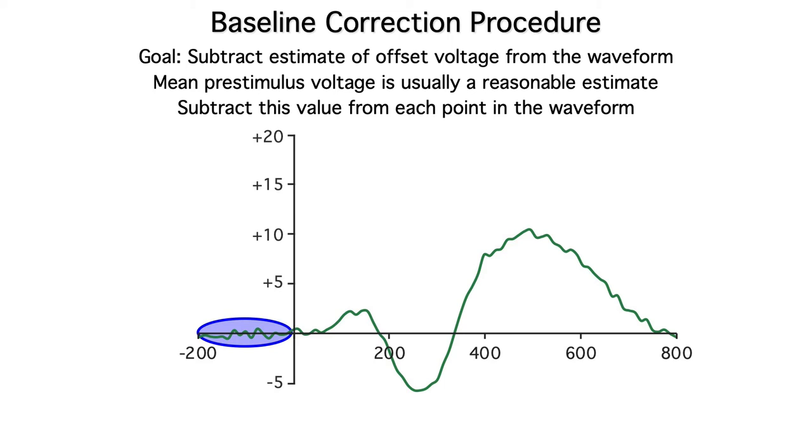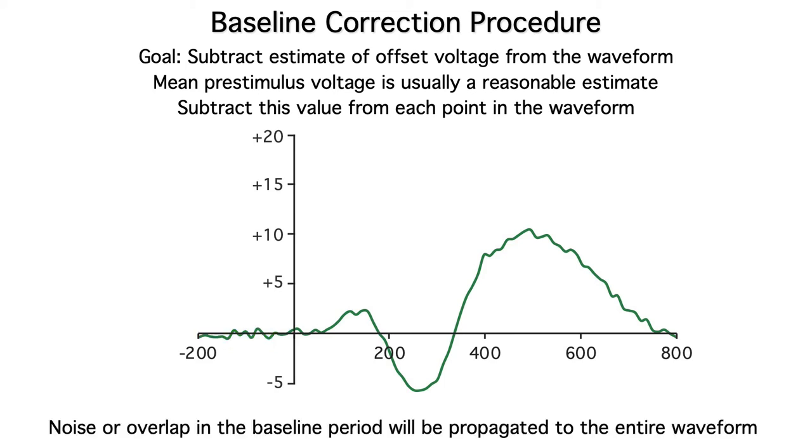What could possibly go wrong? Well, here's the problem. Any noise or overlapping activity from the previous stimuli will distort the pre-stimulus voltage, and the baseline correction procedure will cause that distortion to propagate to the entire ERP waveform.